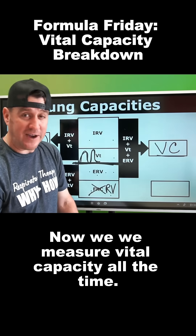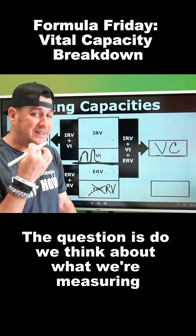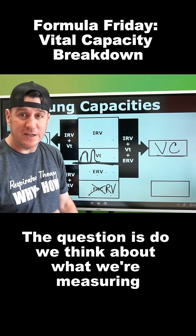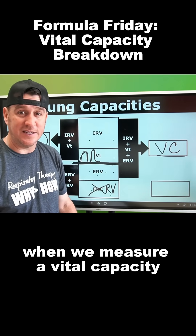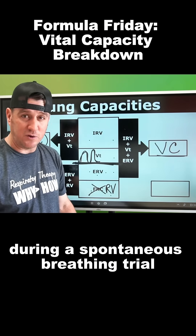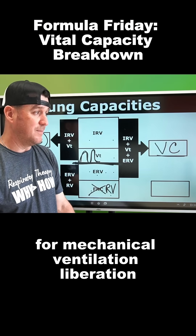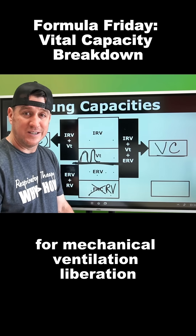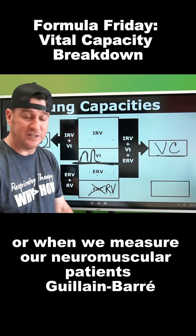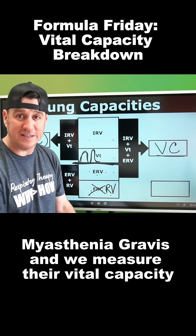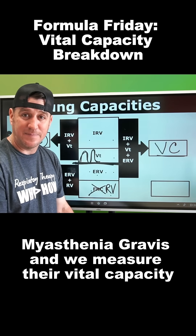Now we measure vital capacity all the time. The question is, do we think about what we're measuring? When we measure vital capacity during a spontaneous breathing trial to assess for readiness for mechanical ventilation liberation, or when we measure our neuromuscular patients — Guillain-Barré, Myasthenia Gravis — and we measure their vital capacity.